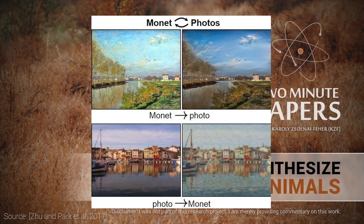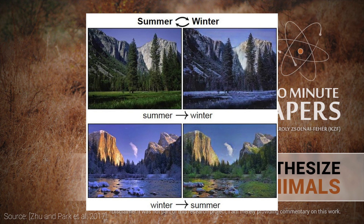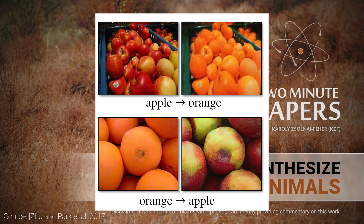This one is about image translation, which means that the input is an image and the output is a different version of this input image that is changed according to our guidelines. Imagine that we have a Monet painting, and we'd like to create a photograph of this beautiful view. What if we'd like to change this winter landscape to an image created during the summer? If we are one of those people on the internet forums who just love to compare apples to oranges, this is now also a possibility.